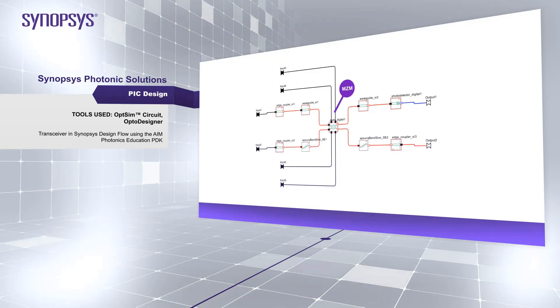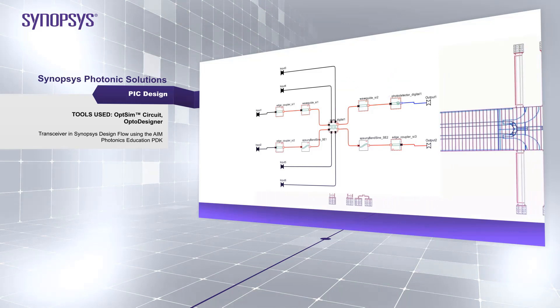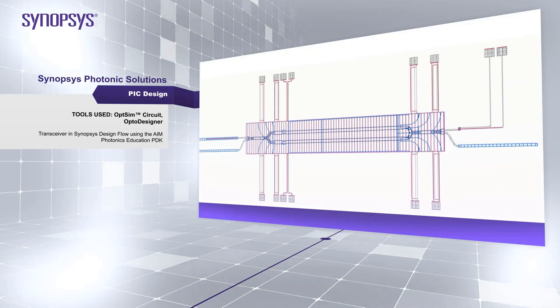This design, incorporating MZM and photodetector elements from the AIM EDPDK, will rely on OpSIM Circuit for schematic entry and simulation, and OptoDesigner for layout, GDS generation, and DRC.